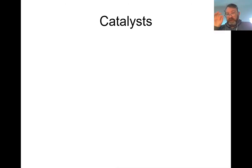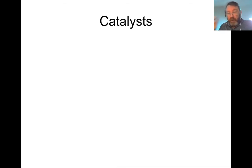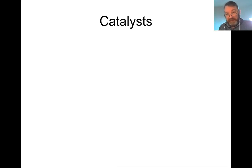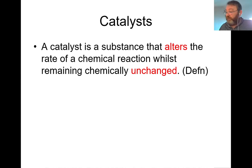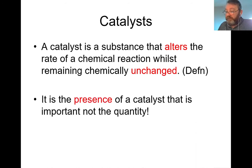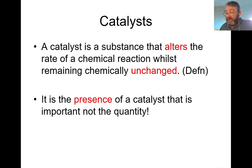The first thing you need to know about catalysts is the definition. A catalyst is a substance - it can be liquid or solid form - and what it does is alter the rate of a chemical reaction. Most importantly, it remains chemically unchanged itself at the end of that chemical reaction. So: a catalyst is a substance that alters the rate of a chemical reaction whilst remaining chemically unchanged.